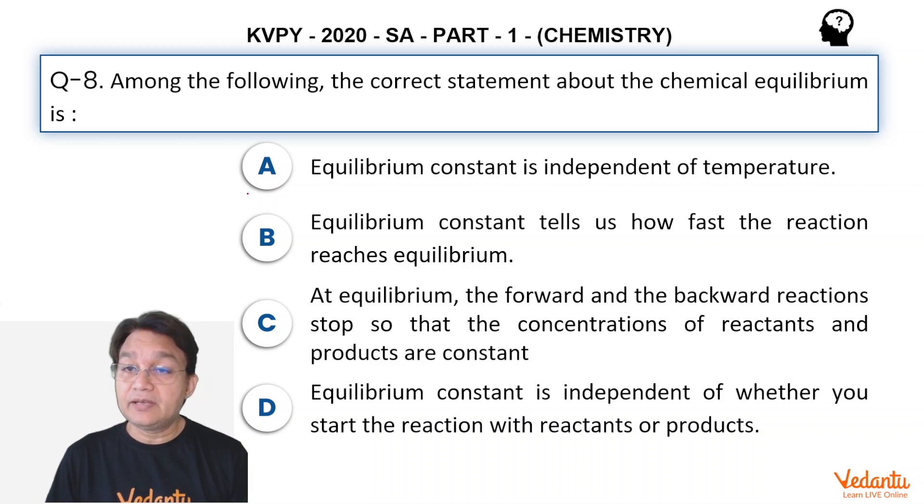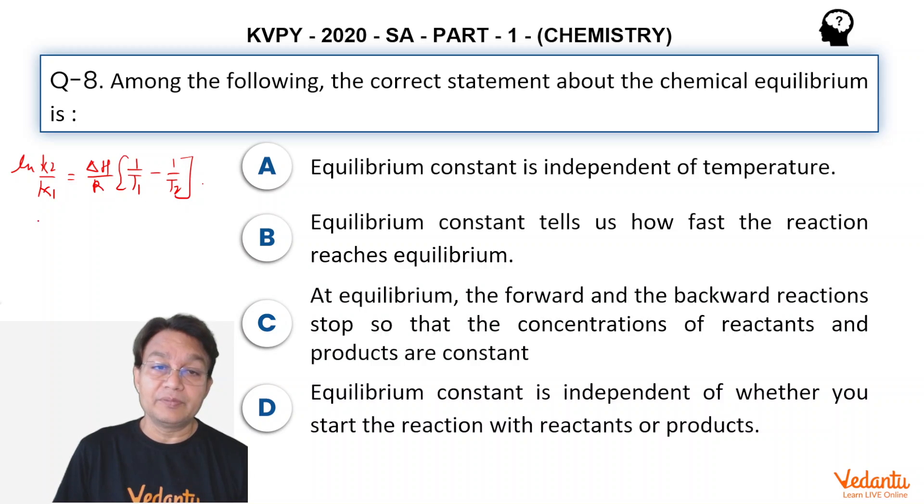Equilibrium constant is independent of temperature. That's absolutely wrong because equilibrium constant depends on temperature and we have equation ln of K₂ upon K₁ equals delta H upon R, 1 upon T₁ minus 1 upon T₂. So of course, it depends on the temperature because equilibrium constant depends on delta G⁰ and delta G⁰ is delta H⁰ minus T delta S⁰. So obviously, by these logics, the first statement is absolutely absurd. So it's incorrect.